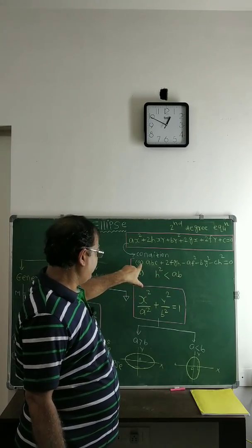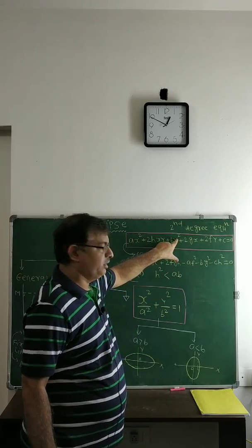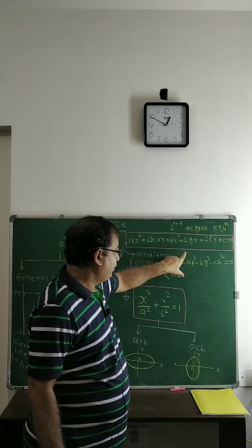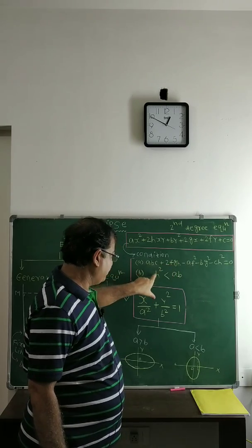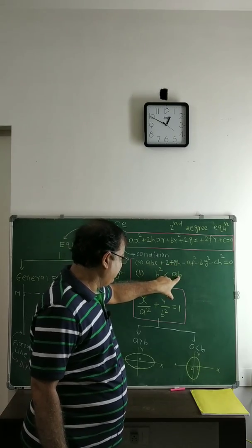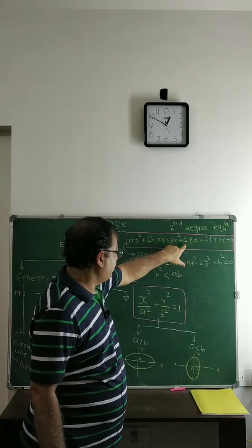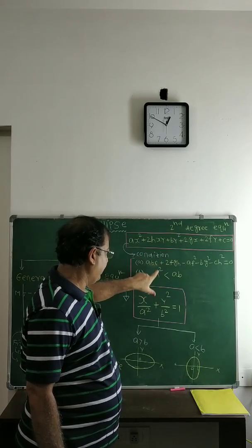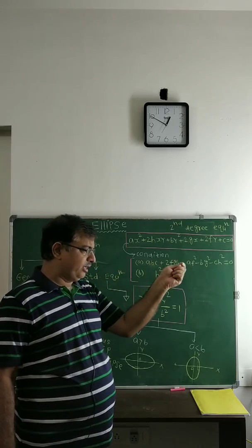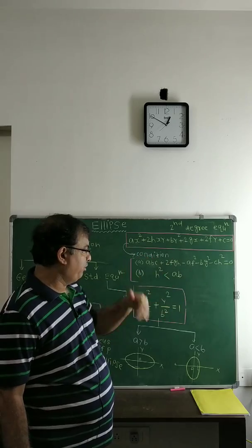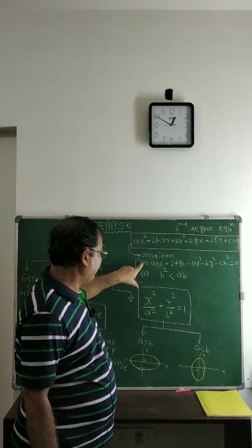We have already discussed Condition A — that quantity has to be non-zero for this equation to represent a conic section, and that is true for parabola, ellipse, as well as hyperbola. But the second condition, h² less than ab, is compulsory specifically for this equation to represent an ellipse. So if a second degree equation is given and we need to find whether it represents a parabola, ellipse, or hyperbola, we can utilize Condition A and B.